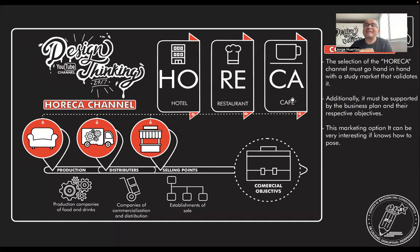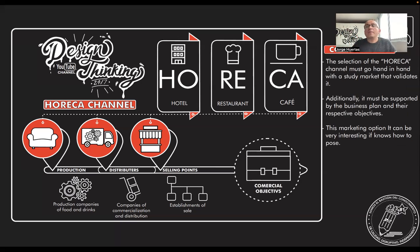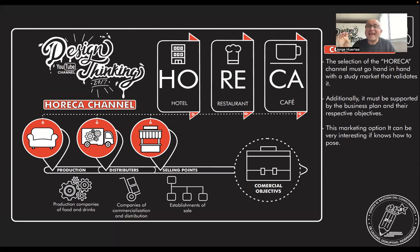As a conclusion, the selection of the ORECA channel must go hand in hand with a market study and it has to be validated. Many people say they want to open a bar, develop a restaurant, or a cafe. However, you need to understand everything around the business — you have to have a value proposition, a business model, make validation, and the business plan must support the respective objectives.